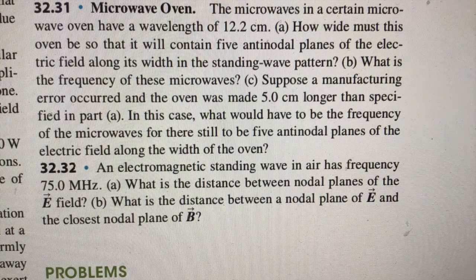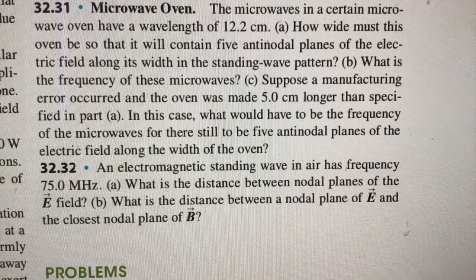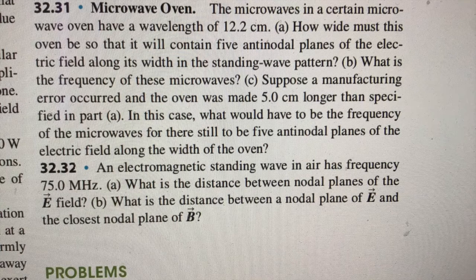We're going to look at electromagnetic waves and in particular microwave ovens. So this problem we're asked, we're told the microwaves in a certain microwave oven have a wavelength of 12.2 centimeters. So how wide must the oven be so that it will contain five antinodal planes of the electric field along its width in the standing wave pattern?